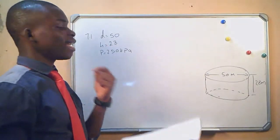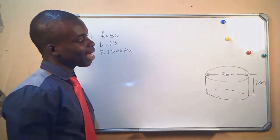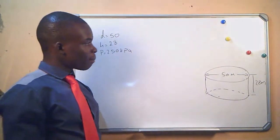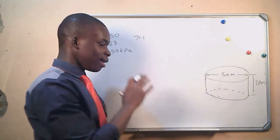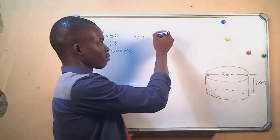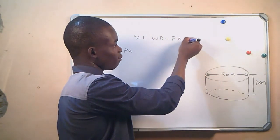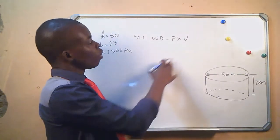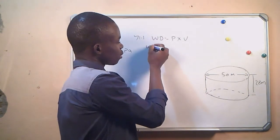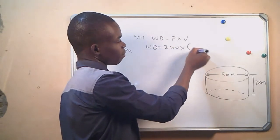The information we are given includes the diameter of the dam, the height of the dam, and the pressure. For Question 7.1.1, we need to determine the amount of work needed to fill the dam to capacity. We know work done equals pressure times volume. We have the pressure, we have the diameter, and the stroke length, so we can calculate the volume. Work done equals the pressure, which is 250, times the volume.